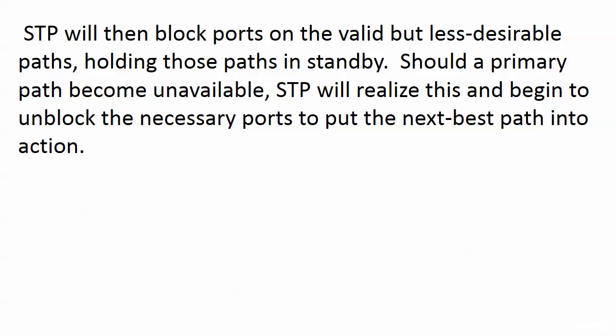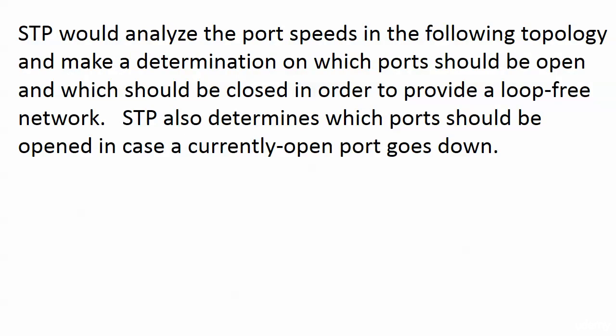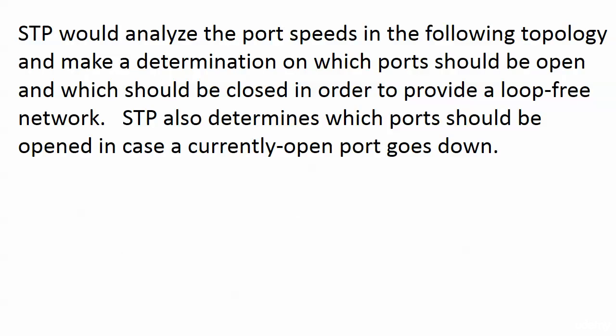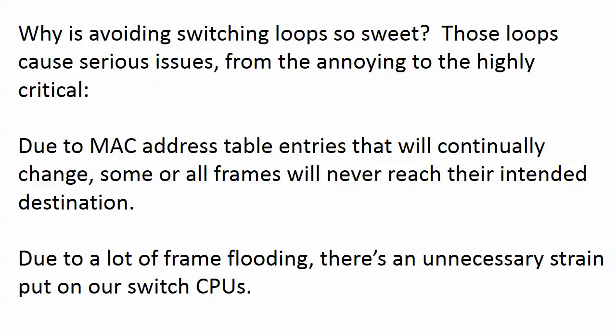If a cable goes loose or a port goes bad along the primary path, STP realizes that and starts bringing ports out of blocking mode, because now we need to use the backup path. STP analyzes port speeds and, in a network with a lot of redundancy, determines the best path between any two switches, putting other ports in blocking mode to maintain one loop-free path. STP determines not only which ports should be open but also, if an open port goes down, which port should be opened next. This is how STP helps us avoid switching loops.